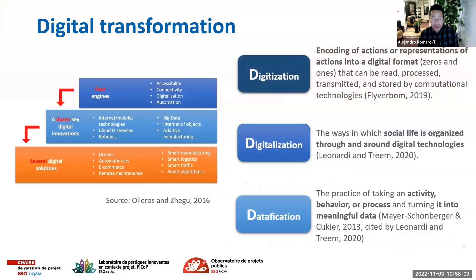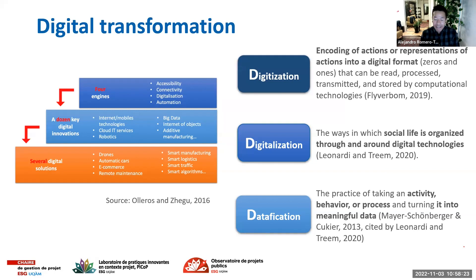Right now we are in a digital transformation and organizations are trying to implement new technologies to develop new capabilities. These capabilities include accessibility and connectivity — we want to have access to the information and data we have in the organization. We also want to digitalize and automate some processes, and that applies to temporary organizations like projects.